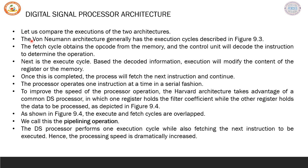Let us compare the executions of the two architectures. In the von Neumann architecture, the first step in execution is the fetch cycle, where the opcode is fetched from memory. The control unit decodes the instruction to determine the nature of the operation. Next comes the execute cycle — based on the decoded information, execution modifies the contents of the register or memory. Once complete, the processor fetches the next instruction. The processor operates one instruction at a time in a serial fashion, hence it is slow.